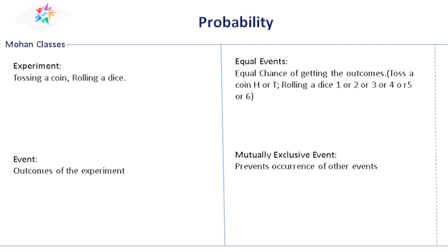In this video we are going to discuss the definitions of some concepts of probability. Let us start one by one. What is called an experiment? An experiment is nothing but doing the toss of a coin or rolling a dice. These are all called experiments. When we are tossing the coin, what will we get? We will get either head or tail. Similarly, if you are rolling a dice, what will we get? We will get any one number from 1 to 6. So this is called an experiment.